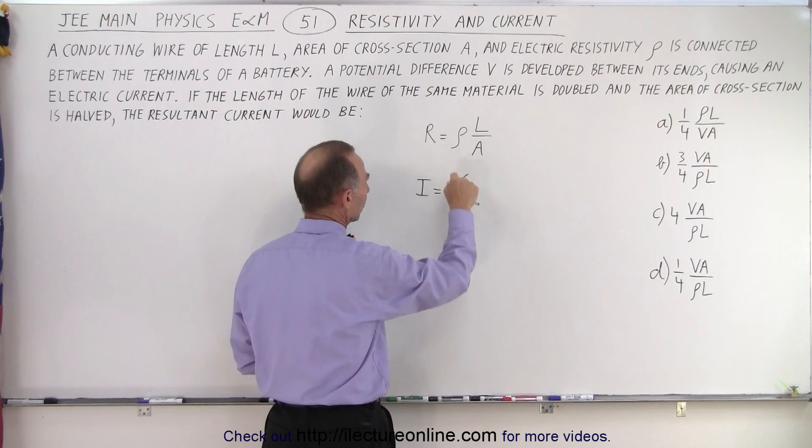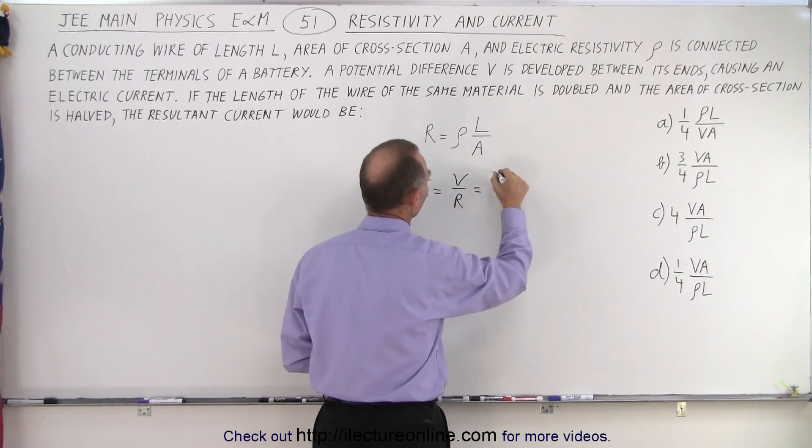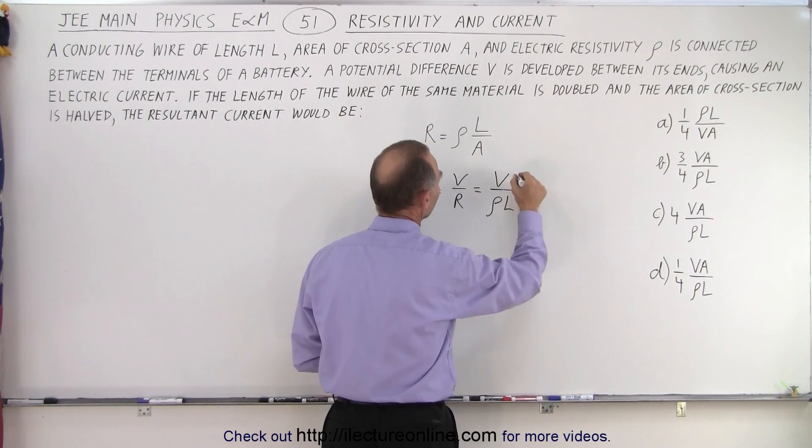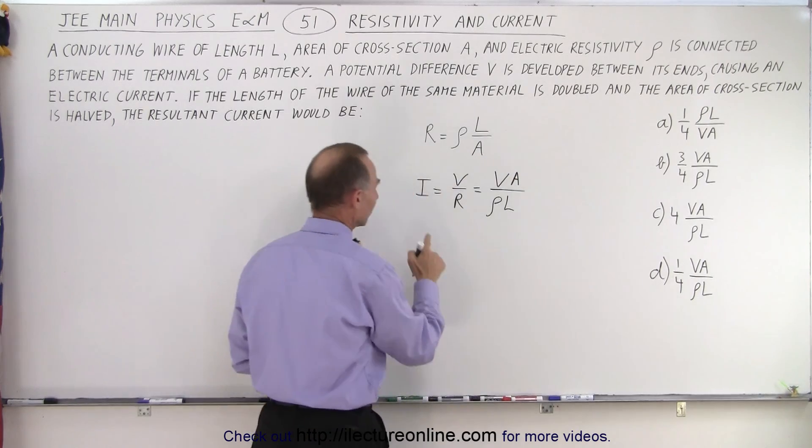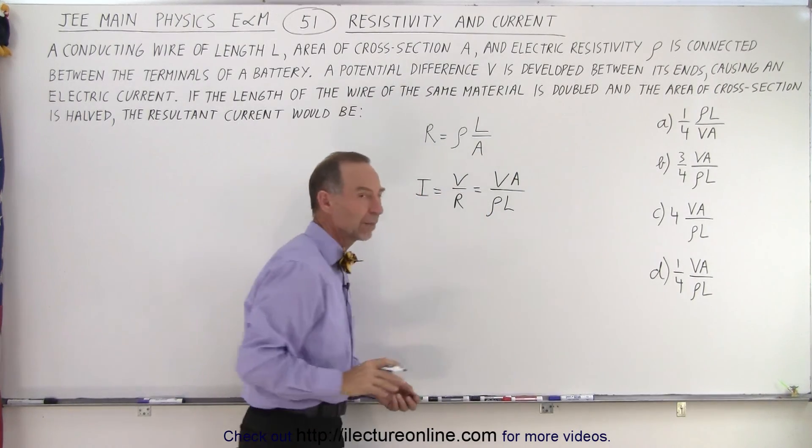If you plug in this resistance, we can say that's equal to V divided by rho L times A. So the current is equal to this.